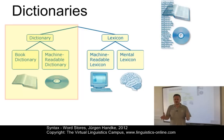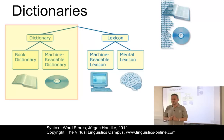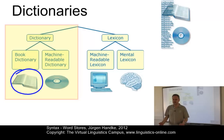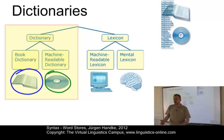Word stores that are primarily consulted for the reason of retrieving information about the words of a language are referred to as dictionaries. Today, we have two types of variants of dictionaries. We have book dictionaries — the classical form of a dictionary — and we have machine-readable dictionaries.